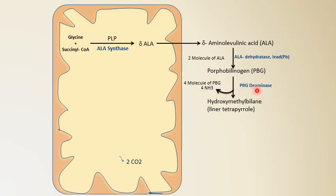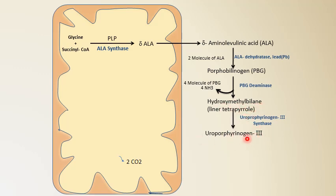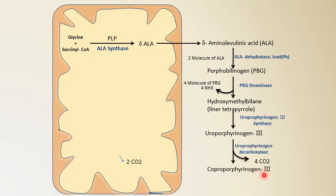Hydroxymethylbilin is then spontaneously converted to uroporphyrinogen III — a cyclical structure — with the help of uroporphyrinogen III synthase. Uroporphyrinogen III is then converted to coproporphyrinogen III with elimination of 4 molecules of CO2; the enzyme is uroporphyrinogen decarboxylase. All these steps occur in the cytosol, while the first step occurs in the mitochondria.